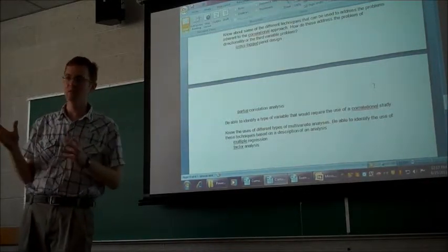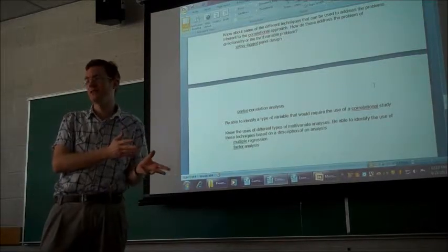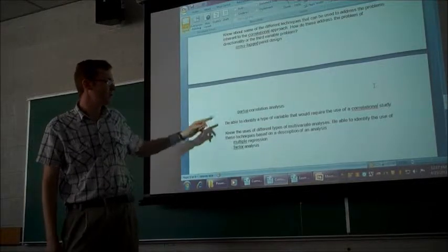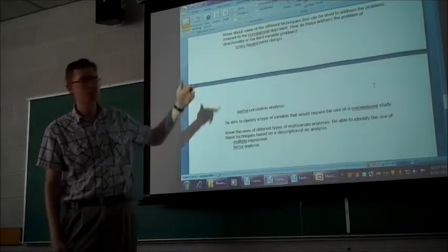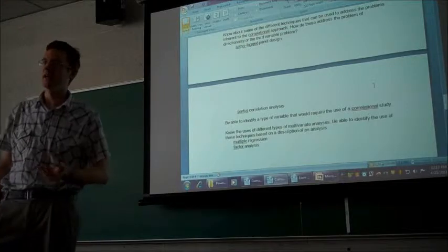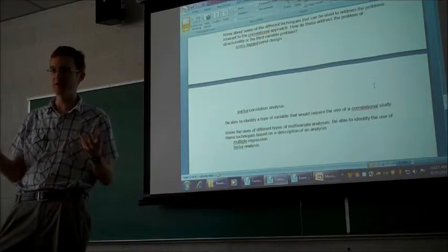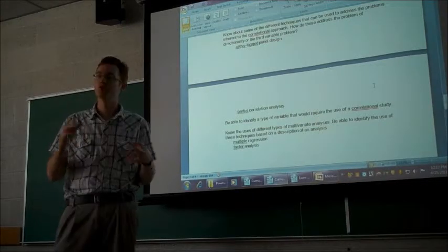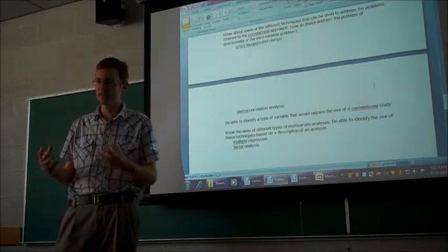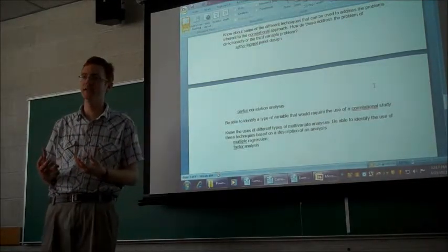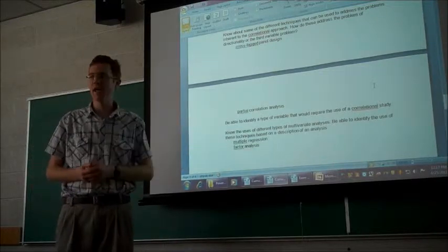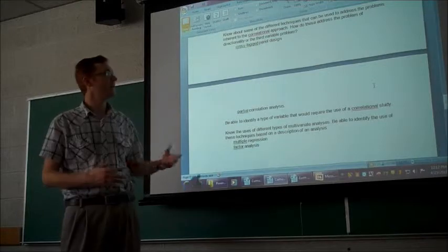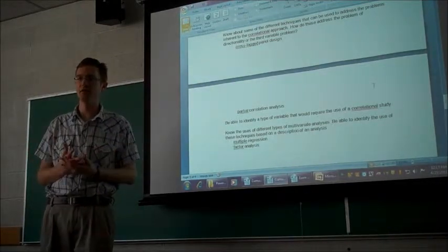You measured A and B but then there's C that you totally forgot about or didn't even think about. And so the partial correlation analysis helps you to address the third variable problem because it lets you take potential third variables and then enter them into an equation that controls for the impact. It statistically controls for the impact that those variables have. So it lets you rule them out as possible problematic third variables.